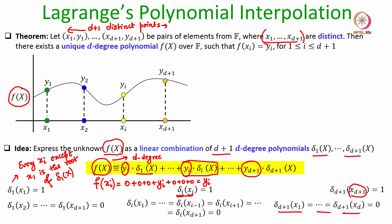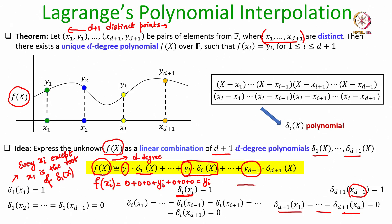The question is what the form of the delta_i polynomial will be. For delta_i to evaluate to 1 at x=x_i and have roots at all other x values x_1, ..., x_{i-1}, x_{i+1}, ..., x_{d+1}, we construct it so that x_1, x_2, x_{i-1}, x_{i+1}, and x_{d+1} are all roots. The only term missing from the numerator is (x - x_i).